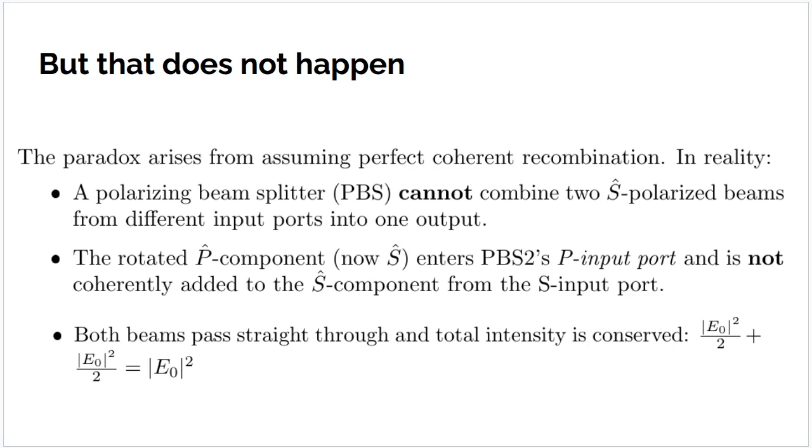What would actually happen is that both beams would pass straight through, and both beams would come out with an intensity of E0 squared upon 2, and you'd get no surplus energy. Okay, that's just a property of polarized light.